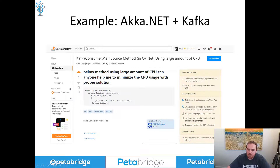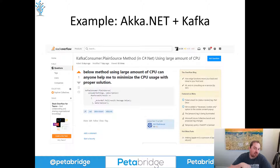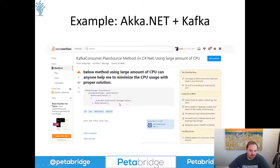To start off, I wanted to use an example of this Stack Overflow question I addressed earlier this week. This user is using one of our open source components, Akka.Streams.Kafka, to build a fairly simple streaming application. They're consuming events from Kafka, and each one of those events is going to get fed into this run-for-each method right here, where they're telling that message to a single actor.